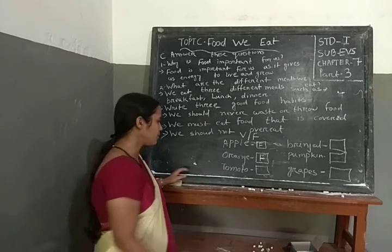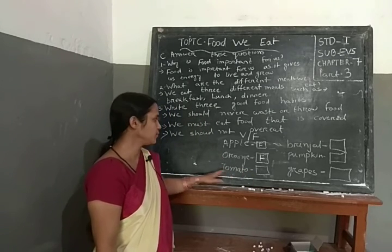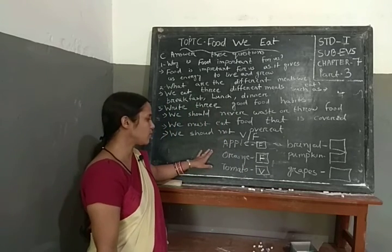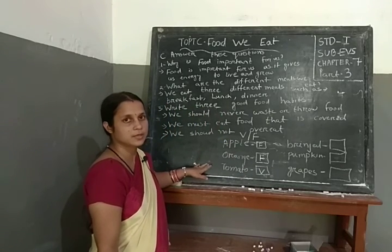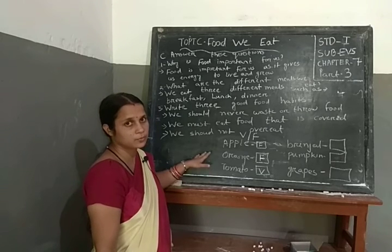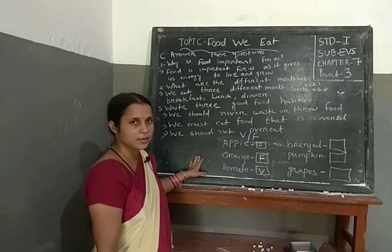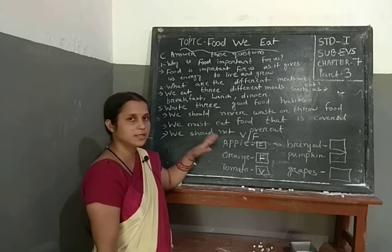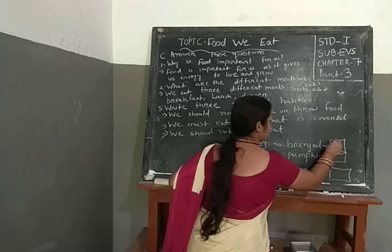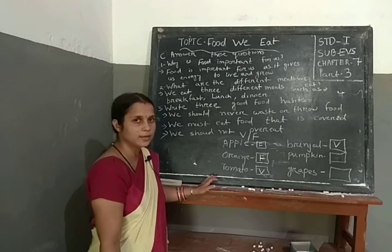Next, tomato. Is tomato a fruit or vegetable? Tomato is a vegetable. Orange and tomato give us vitamins and these foods and vegetables are very good for our health. Next, ginger. Is ginger a fruit or vegetable? Ginger is a vegetable. So write V for vegetable.